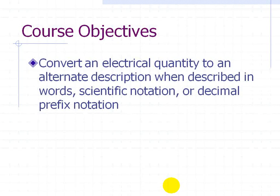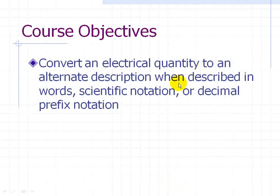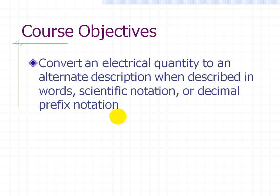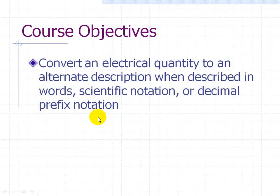Our first course objective is that when we're given a certain electrical quantity, we want to convert it to an alternate description when described in terms of words, scientific notation, or decimal prefix notation. That's a mouthful, but we'll illustrate this through several examples, but we need to discuss what these symbols look like and what they mean.